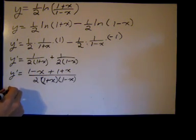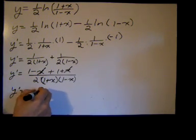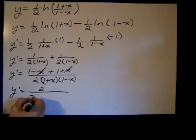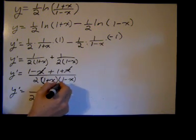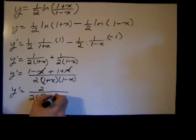And then simplifying, these x's will cancel, and I get y prime equals two over two. And then one plus x, one minus x, difference of squares is one minus x squared.